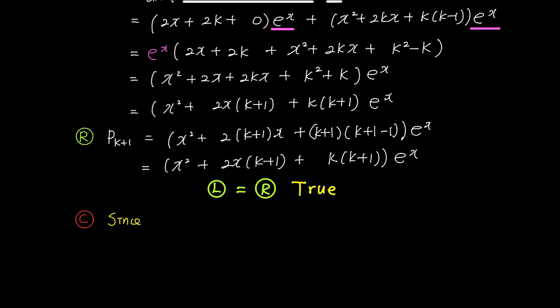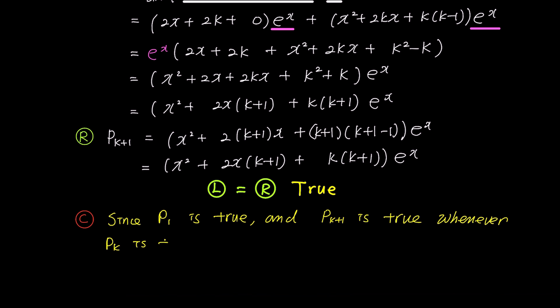Since P(1) is true, and P(k plus 1) is true whenever P(k) is true, therefore P(n) is true for all positive integers n.